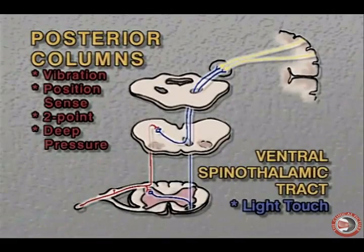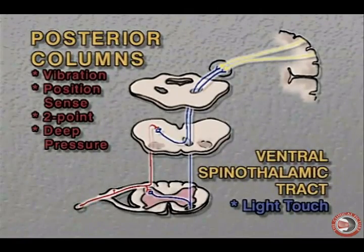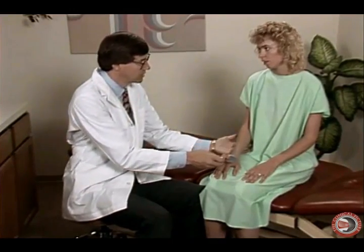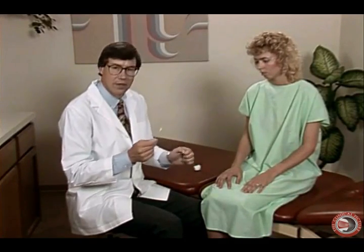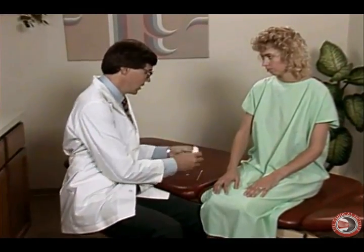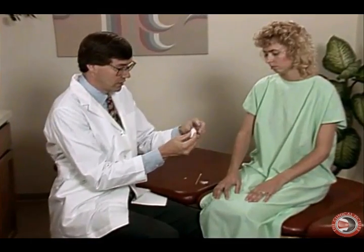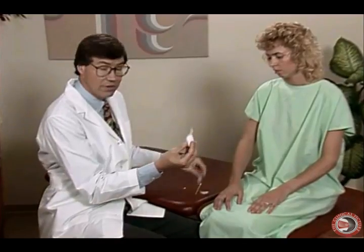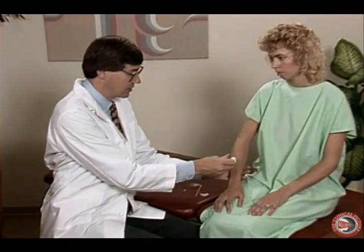The ventral spinothalamic tract carries the sensation of light touch. Light touch can be performed by rubbing the back of the fingers across the hand, asking the patient if they feel it. We should never use the palmar surface of the hands because we'll stroke too strongly. We can also use a troll and stroke to see if the patient feels this, or by taking the tip of a cotton swab or a ball of cotton pulled to create fibers to check for light touch.